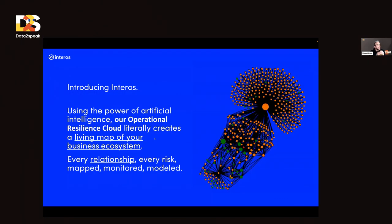Interos AI is a startup based out in Washington, though we are a completely globally remote team. Interos is really trying to use the power of AI to create a living map of your business ecosystem — mapping every relationship, every risk, monitoring and modeling, even for the future.